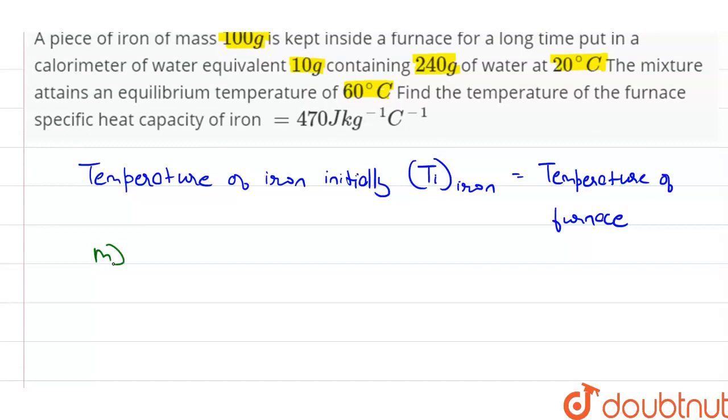Mass of iron, m iron, is given as 100 grams. The equivalent mass of calorimeter, denoted as m cal, is equal to 10 grams.